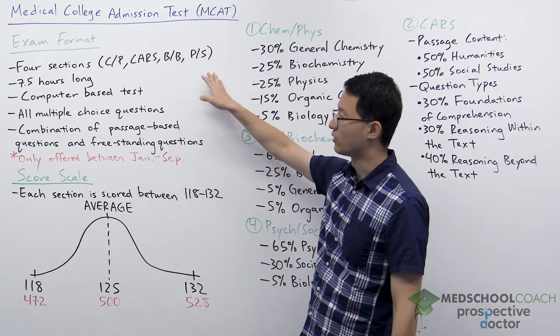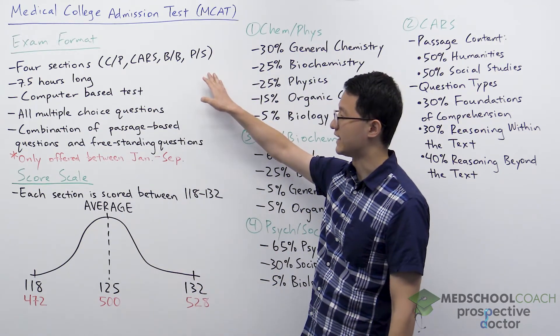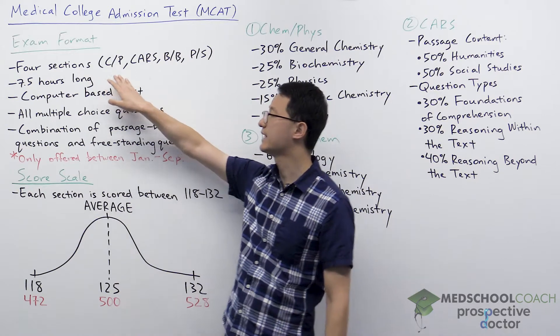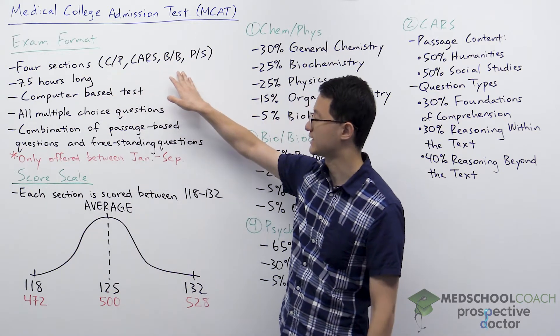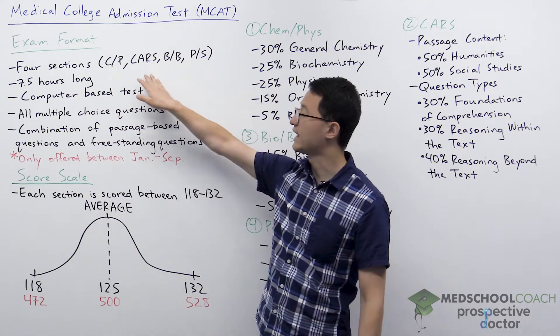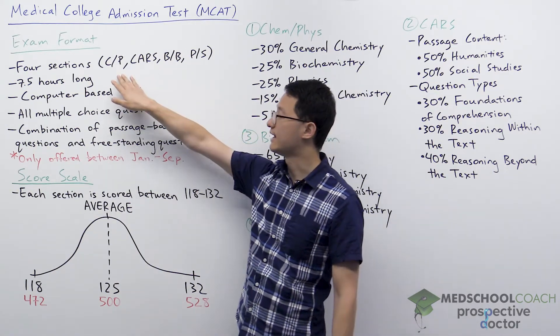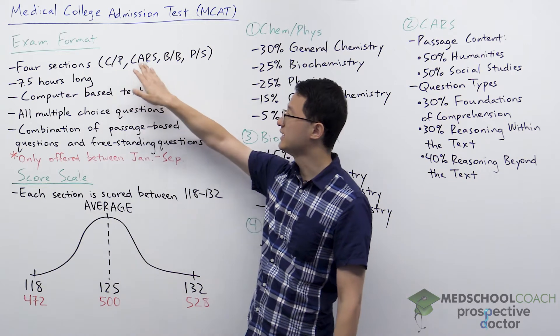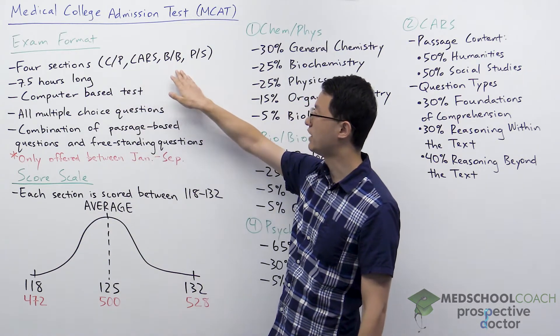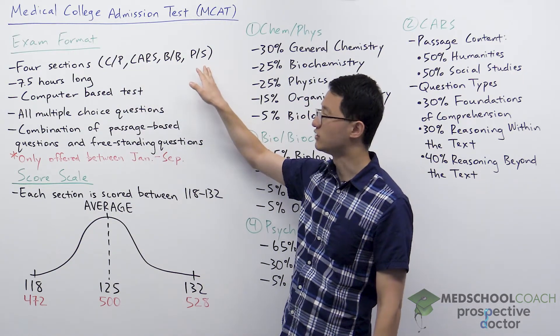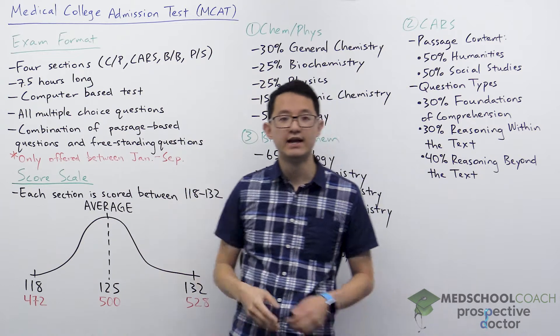Let's go over the format of the exam. The MCAT has four sections: the Chem-Phys section, the CARS section, the Bio-Biochem section, and the Psych-Soc section.